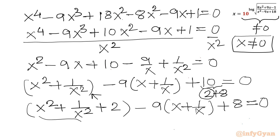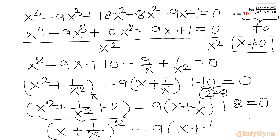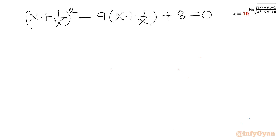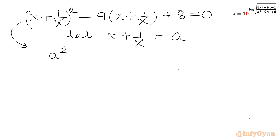Notice that x² + 1/x² + 2 equals (x + 1/x)². So we can write (x + 1/x)² − 9(x + 1/x) + 8 = 0. This is a quadratic equation in (x + 1/x). Let a = x + 1/x, so the equation becomes a² − 9a + 8 = 0.